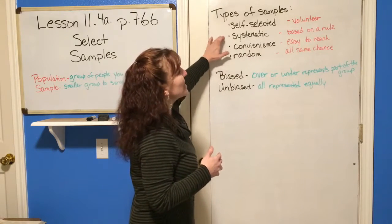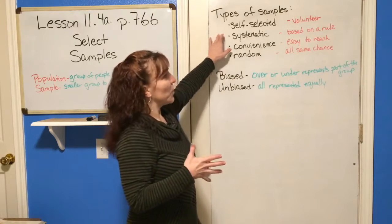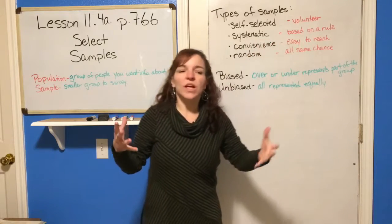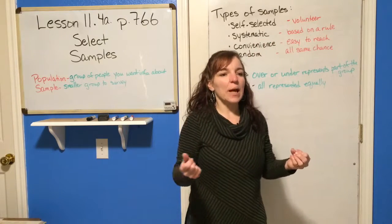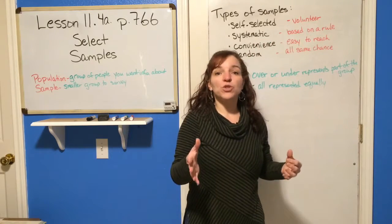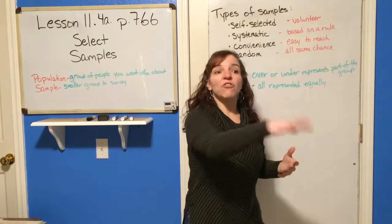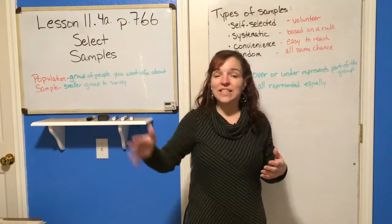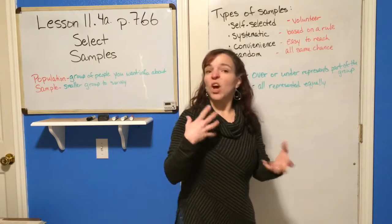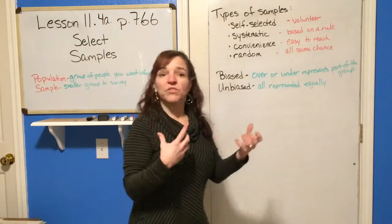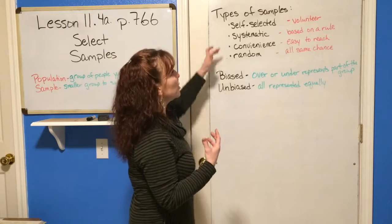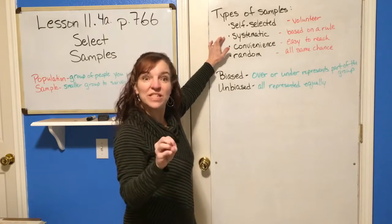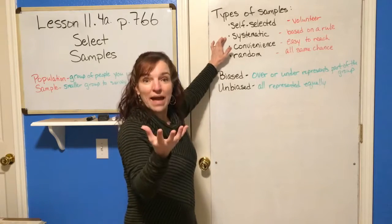A systematic sample is based on a particular rule. Like if I were going to say I'm going to survey every other person in the class — that would be a rule that we've established. That's a systematic sample, a way of choosing systematically.